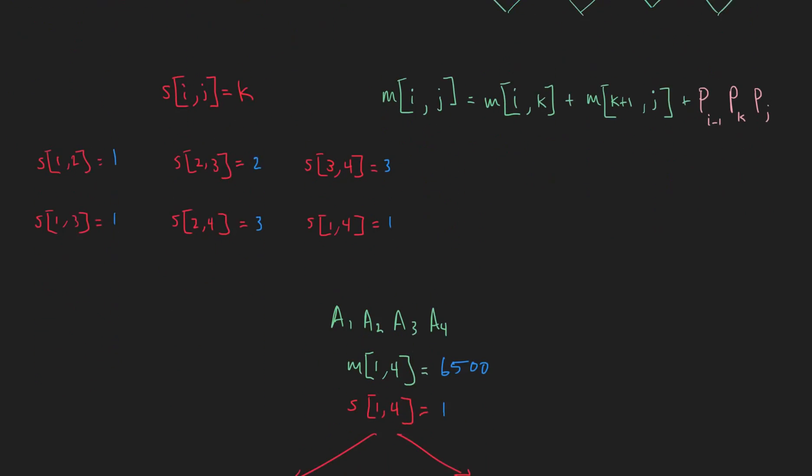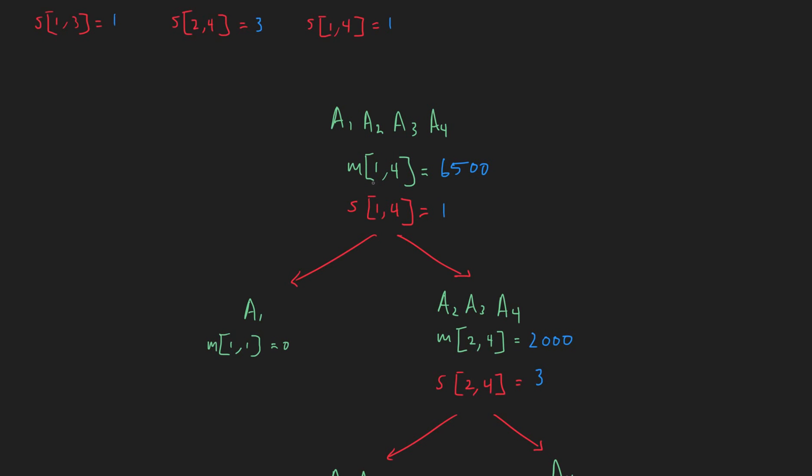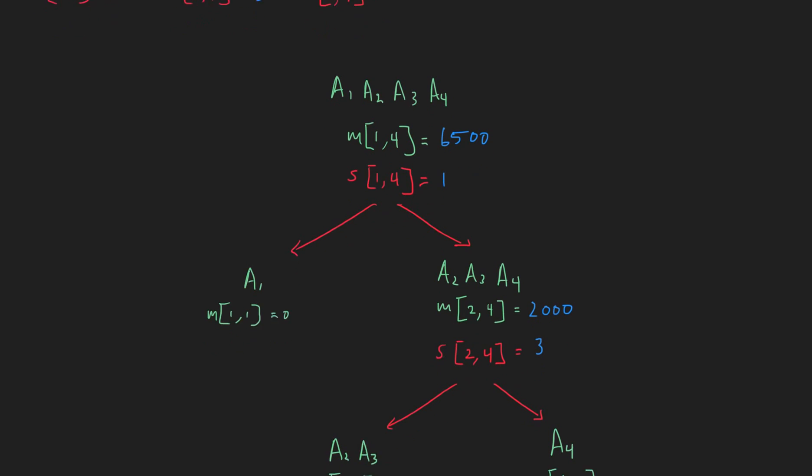And what this means is, let's start using this. So M[1,4] is at the top with 6,500. So we need to check to see what S[1,4] was. It was 1. So what that means is that we're going to start grouping all of this up until index 1. That will be the end of our first group. So we'll group A1 by itself. And we'll group everything else into the second group. Next, we find that S[2,4] was 3. Meaning that we group everything from the beginning up to 3. And then we group everything else by itself. Meaning that we get this kind of a split here. A2 and A3 come together. And A4 is by itself.